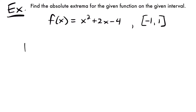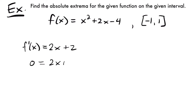So if we do that, we'll have f prime of x is equal to the derivative of x squared, which is 2x, plus the derivative of 2x, which is plus 2, and then the derivative of negative 4, which is zero, because the derivative of a constant is zero. So then if we set this derivative equal to zero, we can solve for values of x. So we'll have zero equals 2x plus 2. Subtracting 2 from both sides gives negative 2x equals positive 2, and then dividing both sides by negative 2, we get x equals negative 1.